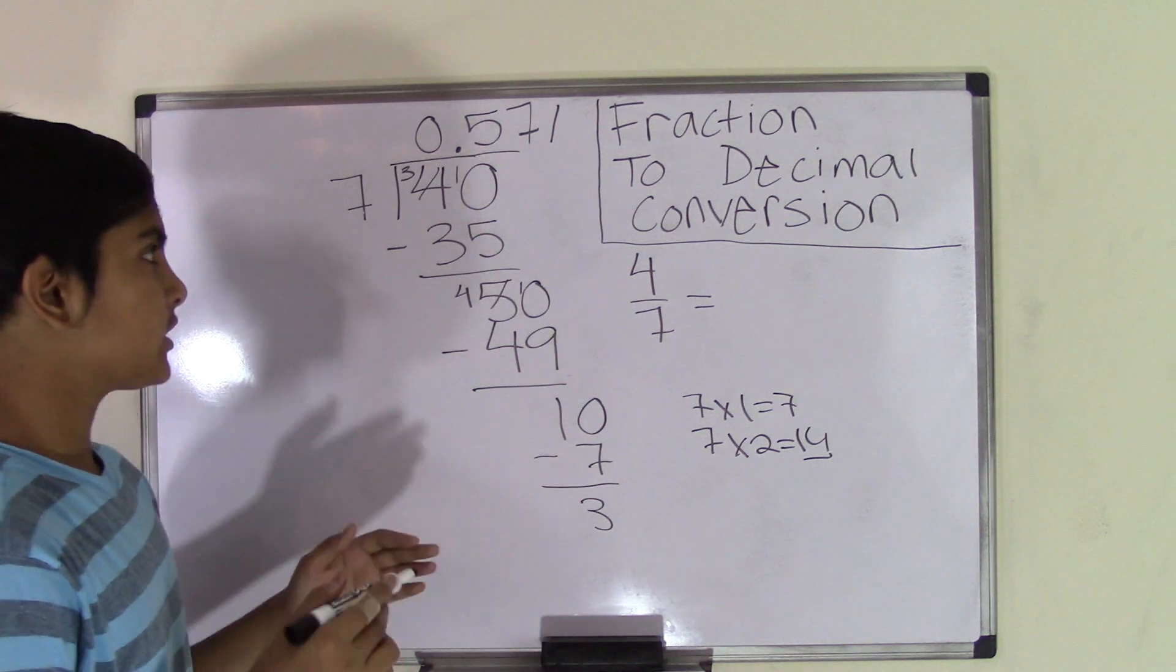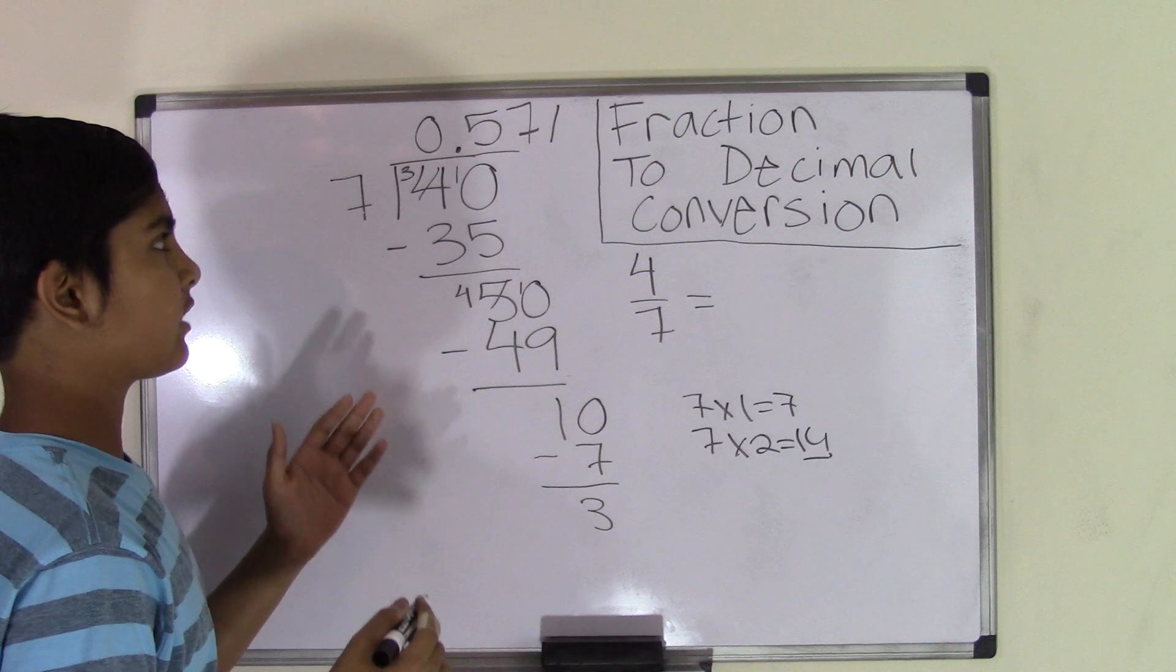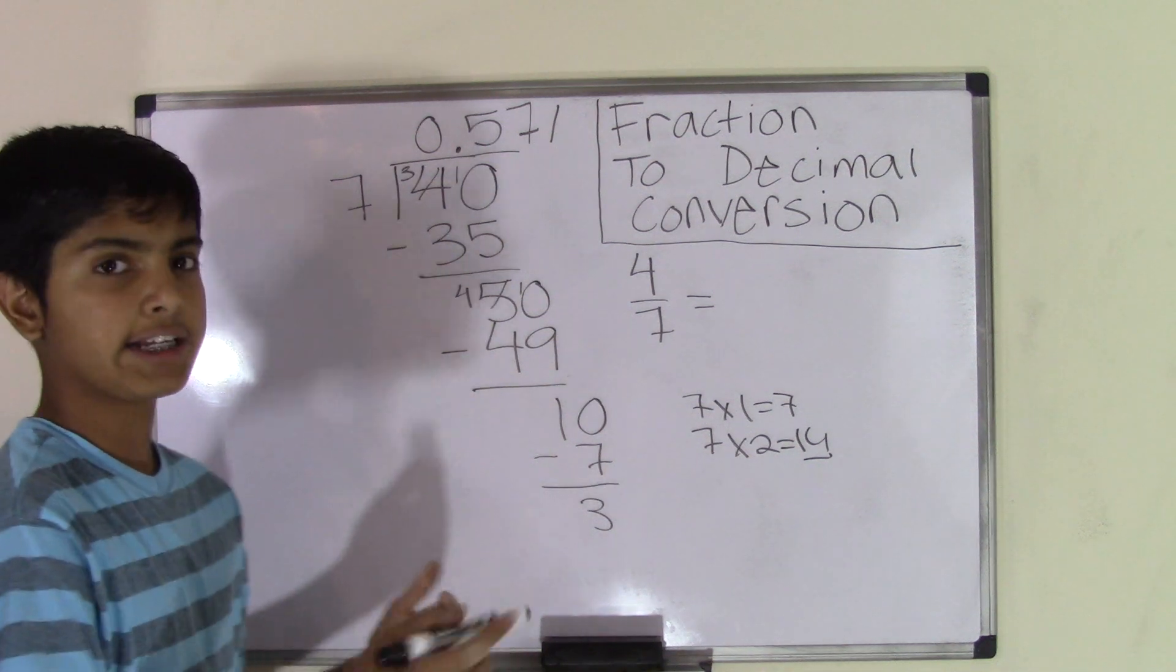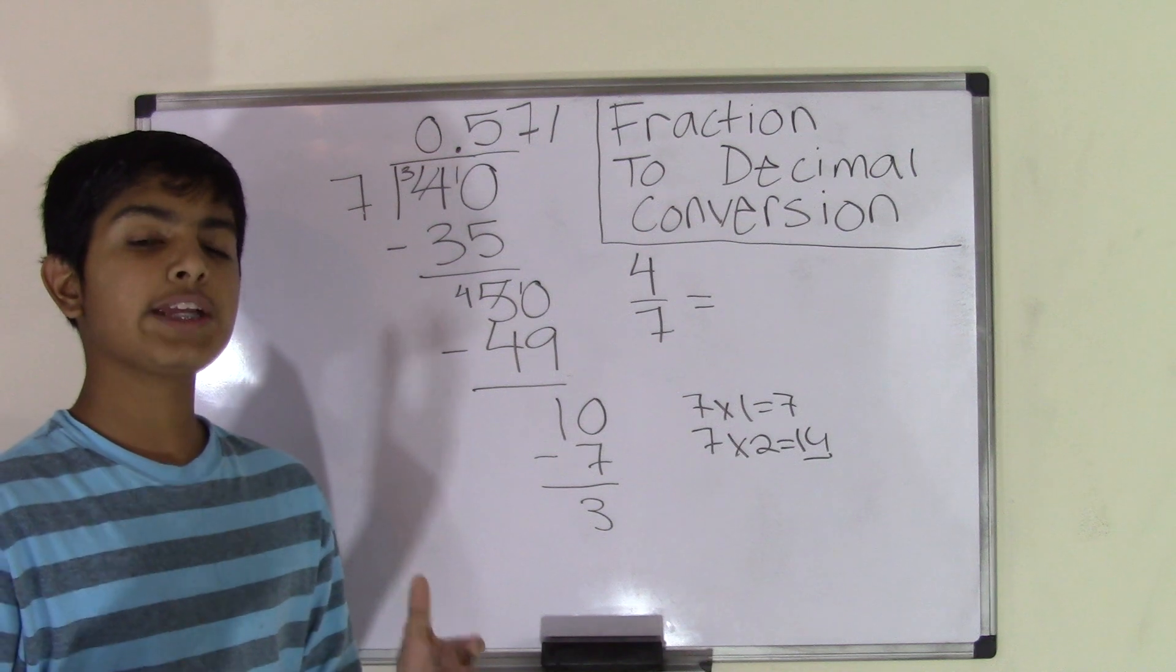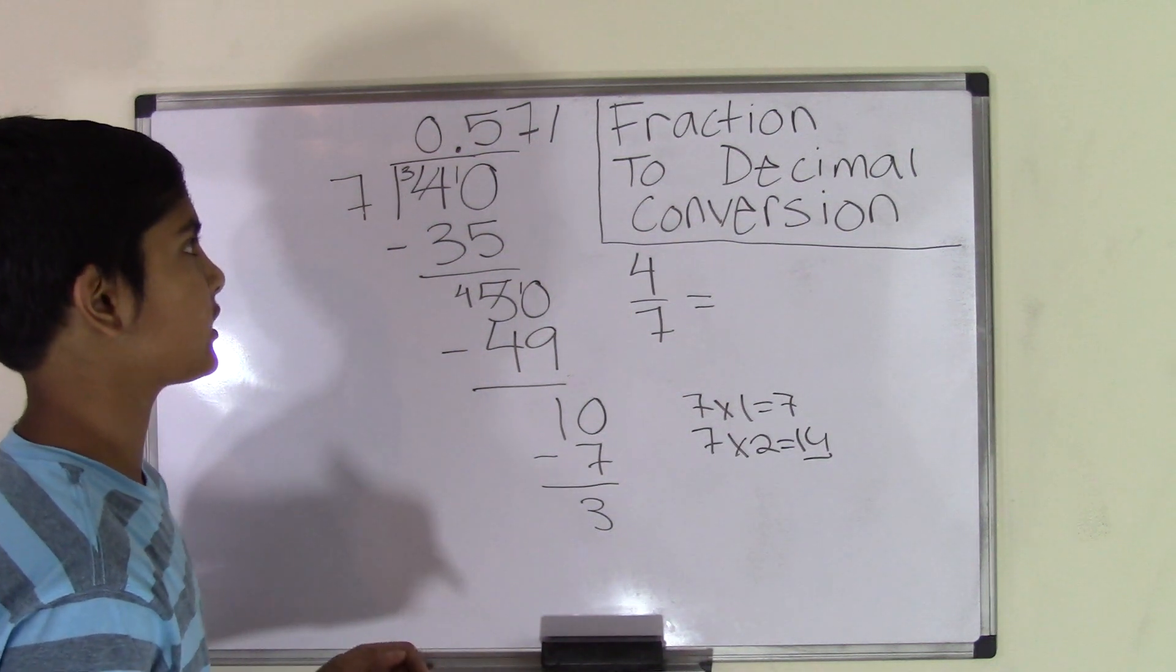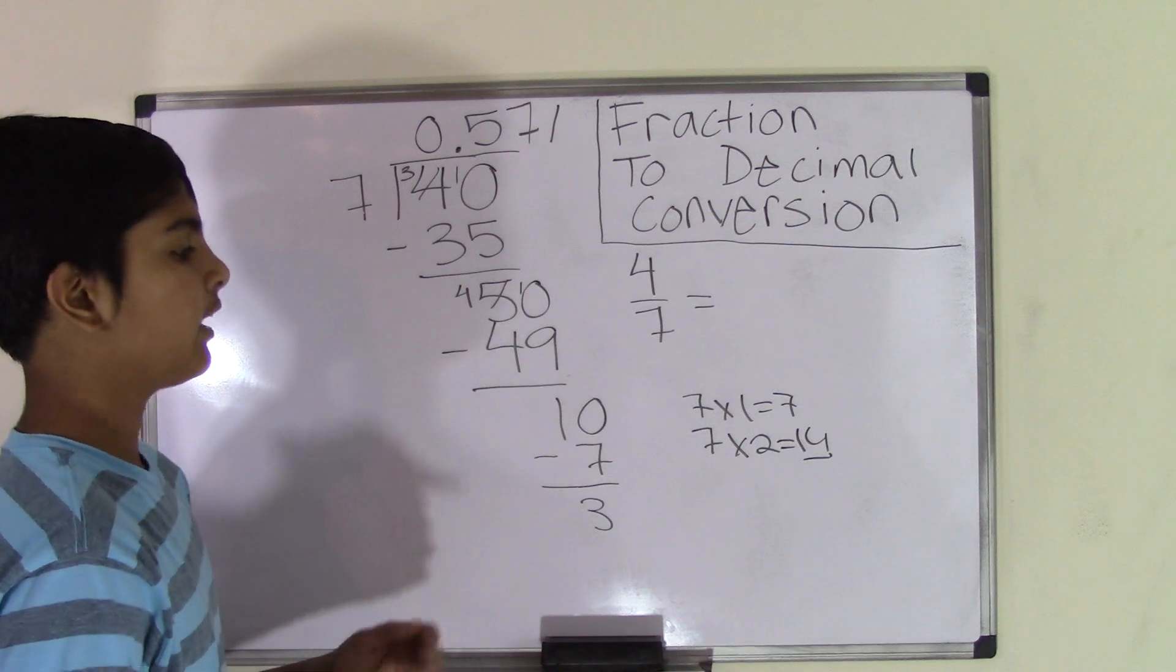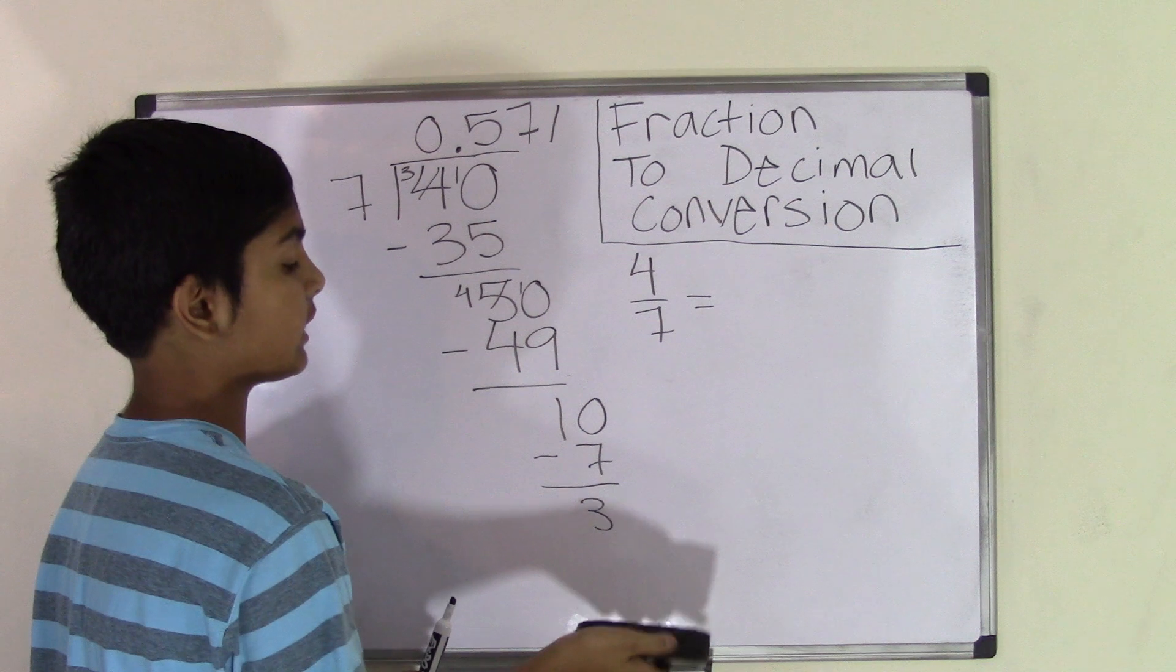Okay, so we stop there because whenever you're dividing two numbers, and you keep on getting quotients, and they keep on going, we stop at the third quotient. So I stopped at 0.571, and now what we need to do is we need to estimate the number. We need to estimate the quotient.